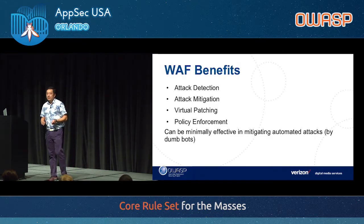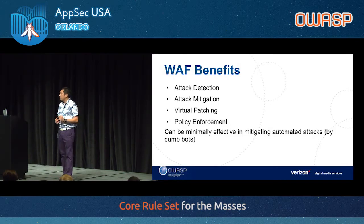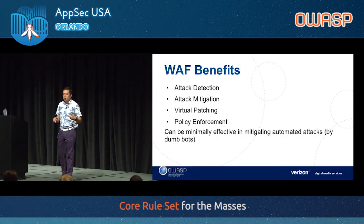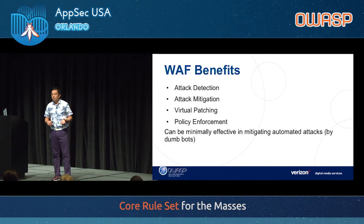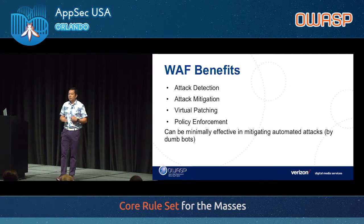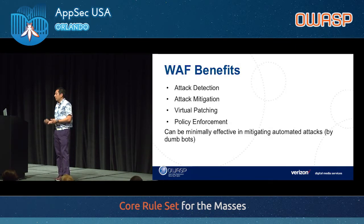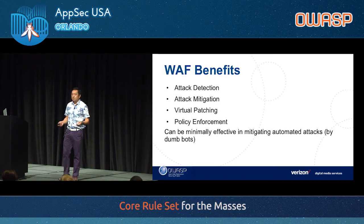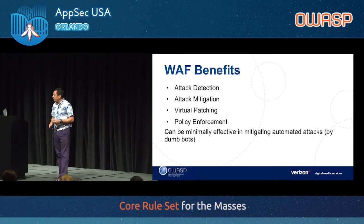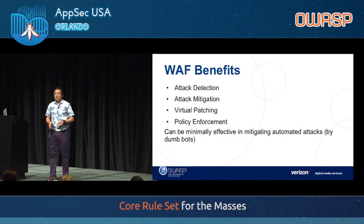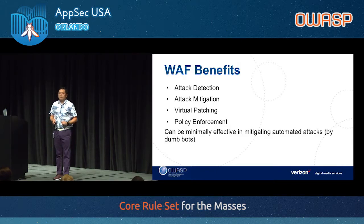Last but not least, policy enforcement — that means attack surface reduction. You can say, for example, I only speak HTTP 2.0, I don't want to support HTTP 1 or 1.1. Or I only support certain HTTP verbs like GET and POST, and I don't want to support OPTIONS or TRACE because those verbs can be used for scanning. A WAF can also be minimally effective in dealing with what we call automated threats — web bots doing things that negatively impact your website.